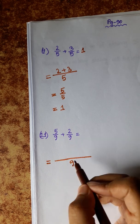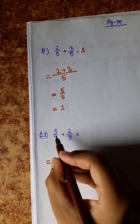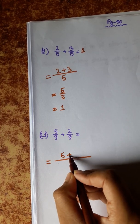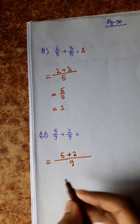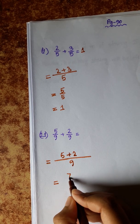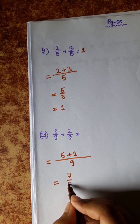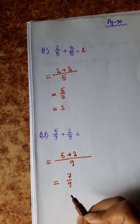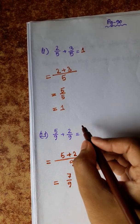The denominator is the same. Numerator: 5 plus 2 equals 7. So the answer is 7 by 9.